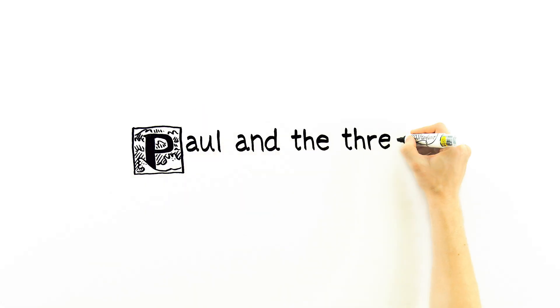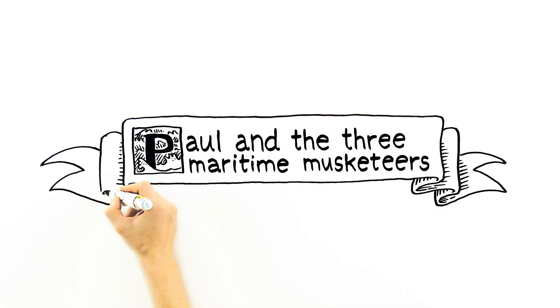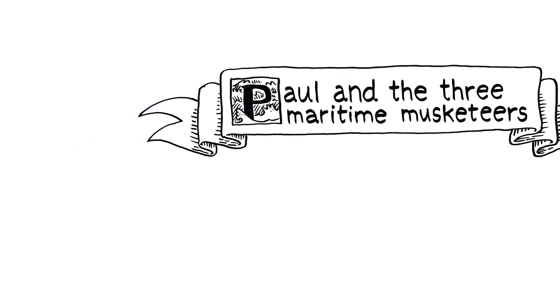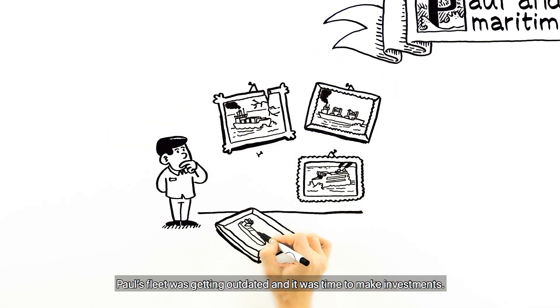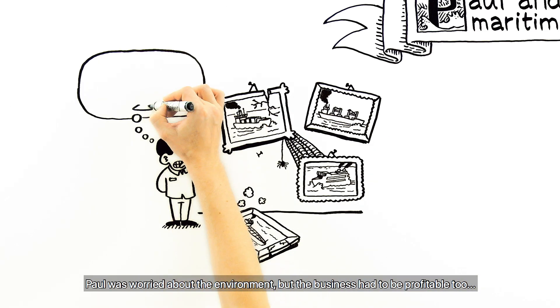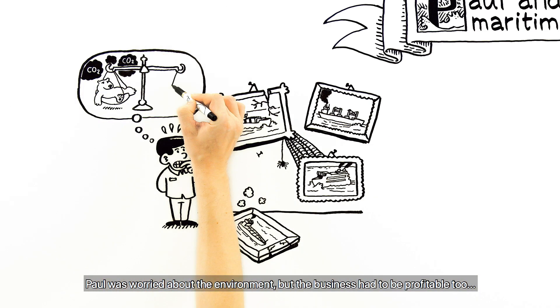Paul and the Three Maritime Musketeers. Paul's fleet was getting outdated, and it was time to make investments. Paul was worried about the environment, but the business had to be profitable too.